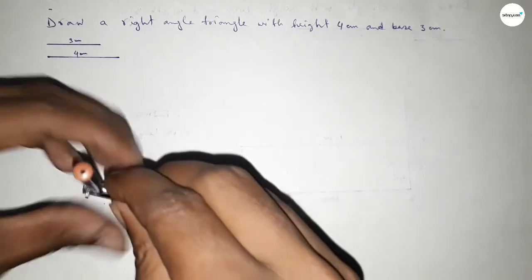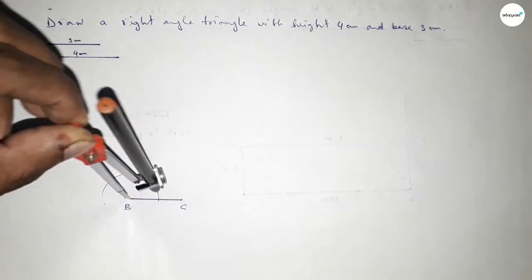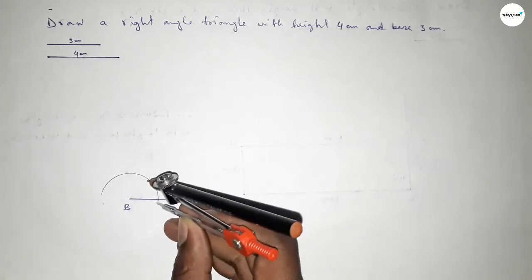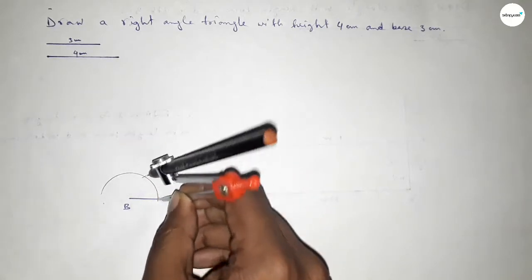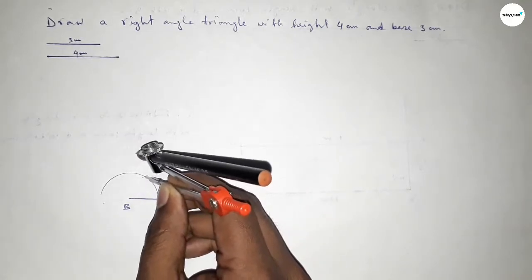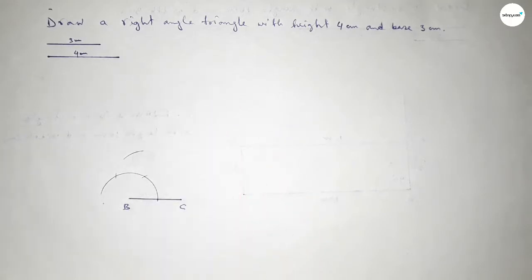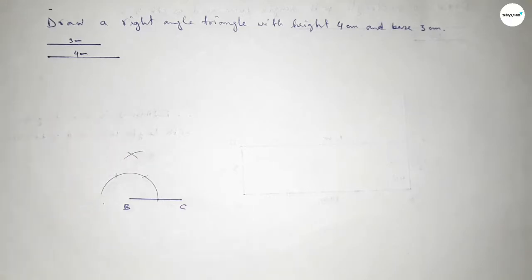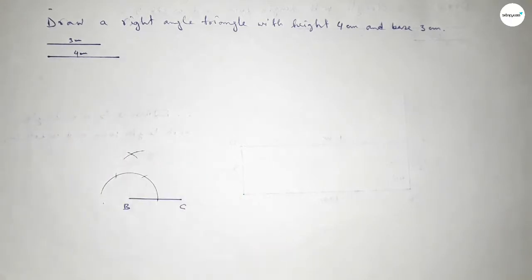Putting the compass on point B and taking any length, drawing an arc. With the same length, putting the compass here and cutting here, then putting the compass here and cutting here, and drawing an arc with the same length, putting the compass here and cutting here.